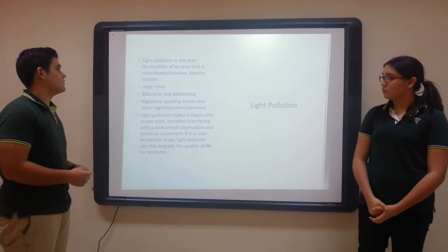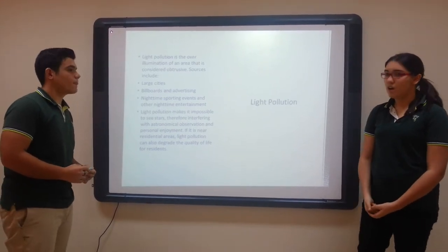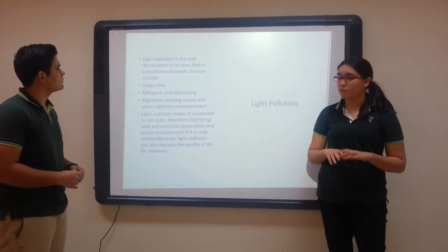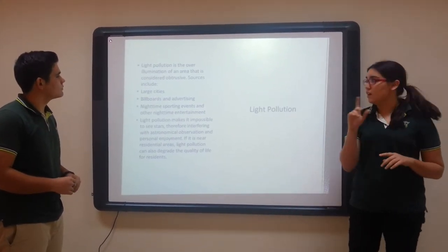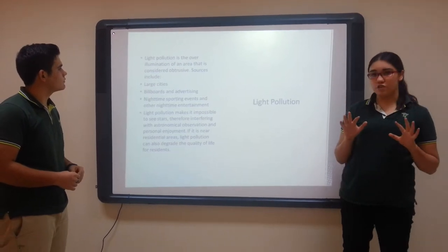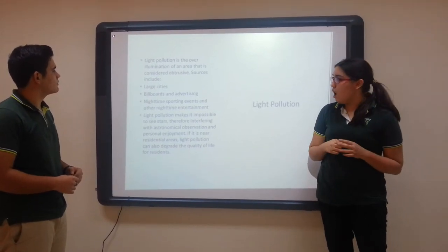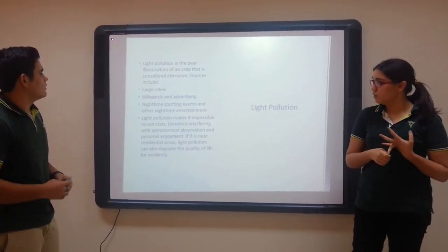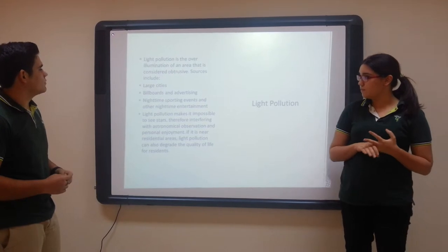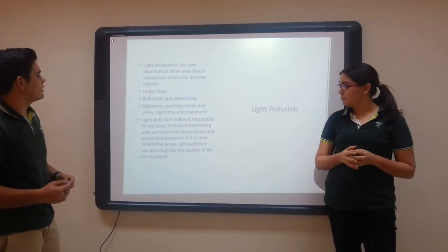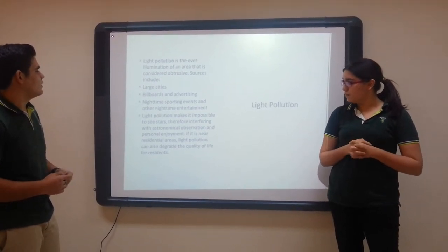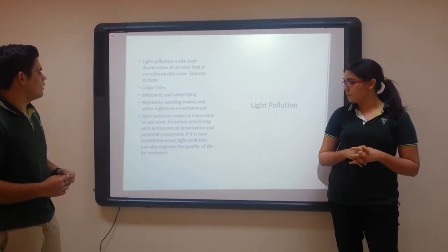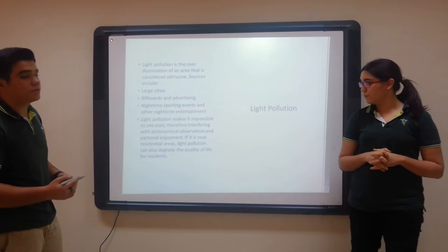Next is light pollution. Light pollution is the over-illumination of an area that is considered obtrusive. Obtrusive sources include large cities, billboards and advertising, nighttime sporting events and other nighttime entertainment.